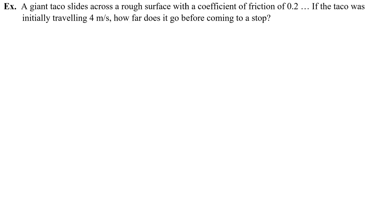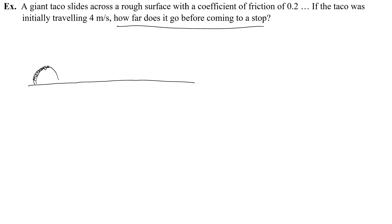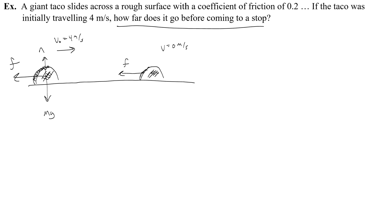A giant taco slides across a rough surface with a coefficient of friction of 0.2. If the taco was initially traveling 4 meters per second, how far does it go before coming to a stop? So draw yourself a taco. Initially it is traveling at 4 meters per second. The free body diagram shows Mg down, normal force up, and friction acting back on the taco. That doesn't mean the taco moves to the left — it's just that as the taco slides, there is a force of friction acting back on it until its velocity is 0. Weight force and normal force are equal.